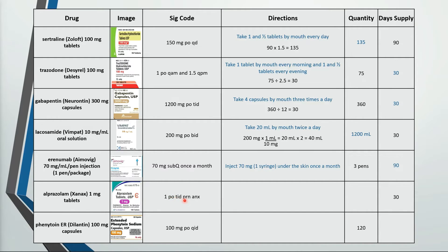This is take one tablet by mouth three times a day as needed for anxiety. 30 times 3 is 90. 100 mg by mouth four times a day is take one capsule by mouth four times a day. 120 divided by 4 is a 30-day supply.